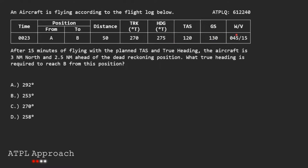We are given a row from a flight plan and are told that after 15 minutes of flying with a planned TAS and true heading, we actually end up 3 nautical miles north and 2.5 nautical miles ahead of our expected position. Now it wants to know what the true heading should be in order to get to where we want to go.